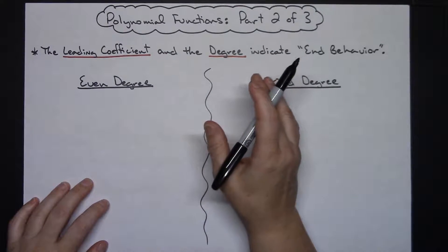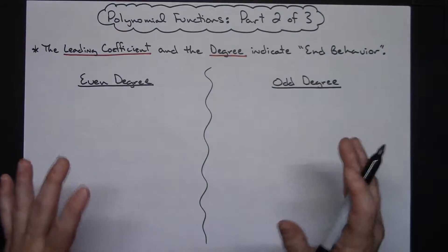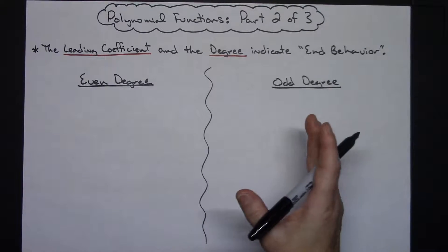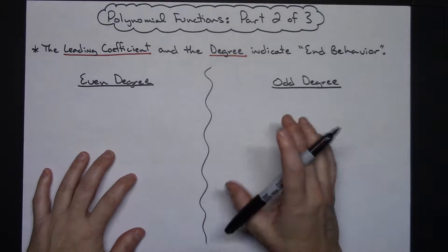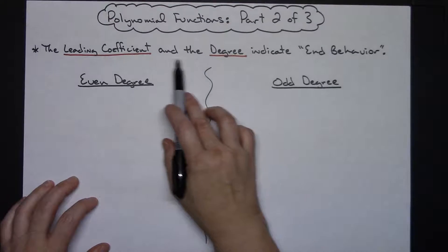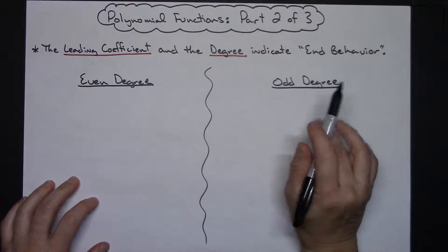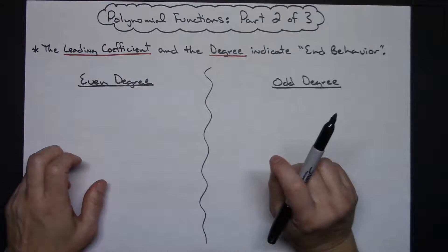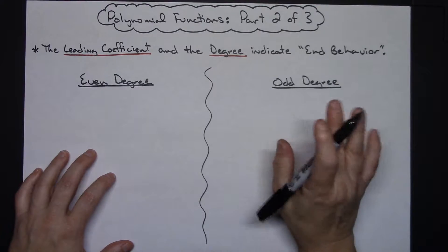One thing you're definitely going to want to do with polynomial functions is know what the end behavior looks like, so that when we go to sketch these things, you kind of already know what they're going to look like — at least as far as end behavior goes — before you get into actually having to graph it.